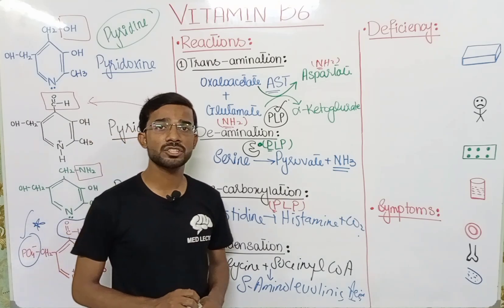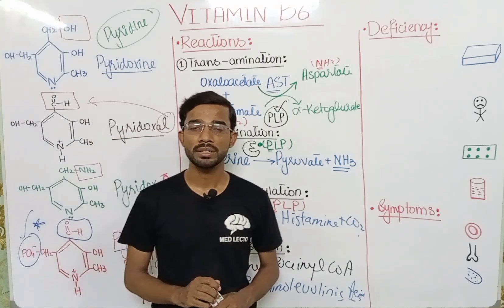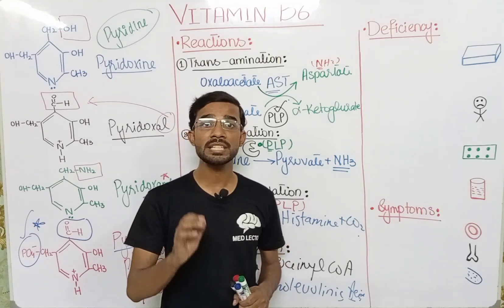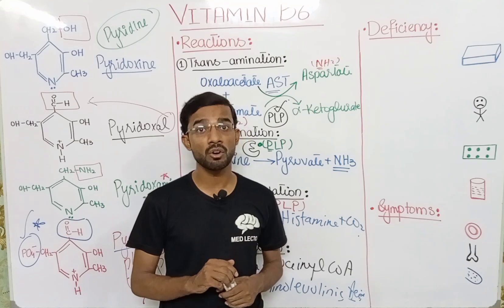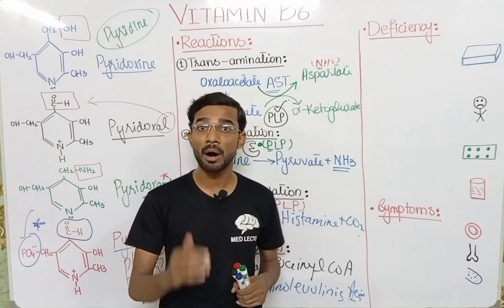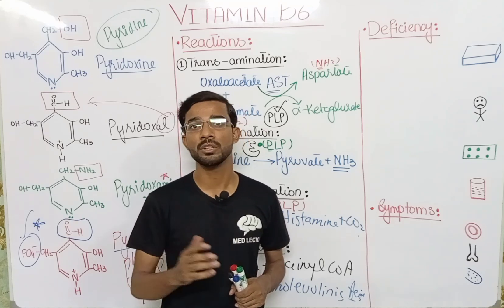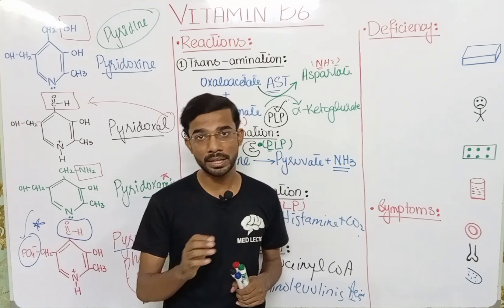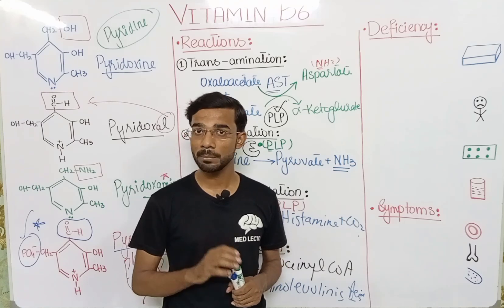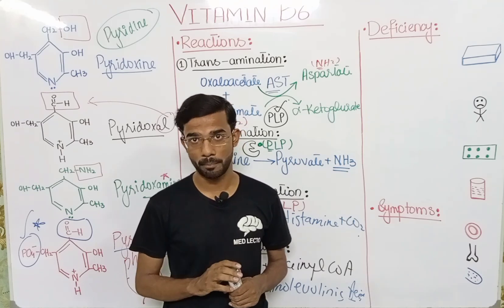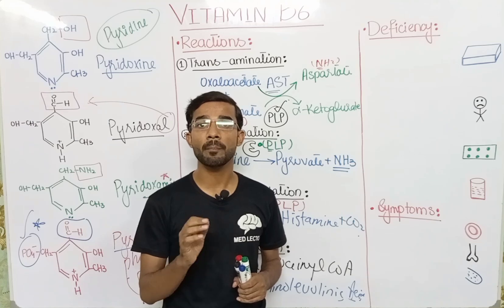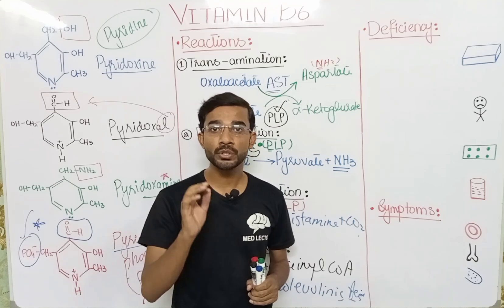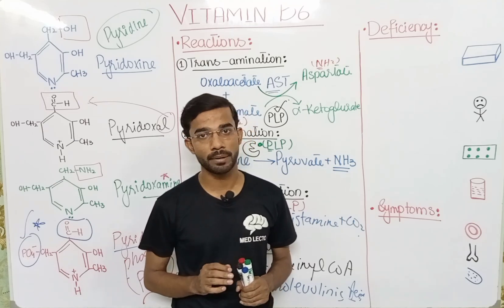Vitamin B6 is a water-soluble vitamin, and as we know, water-soluble vitamins are easily excreted from the body. But this is one vitamin that causes toxicity when the amount exceeds normal. If someone takes 500 mg per day of Vitamin B6, it creates neurological problems, and that is against the RDA — recommended dietary allowance. So the amount of Vitamin B6 should be less than 500 mg per day.